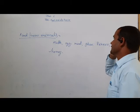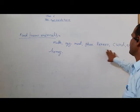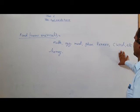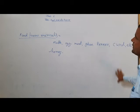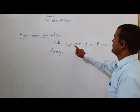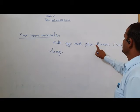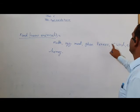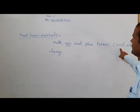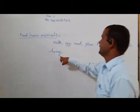Some good food materials are obtained from animals. For example: milk, egg, meat, ghee, paneer, curd, and honey.